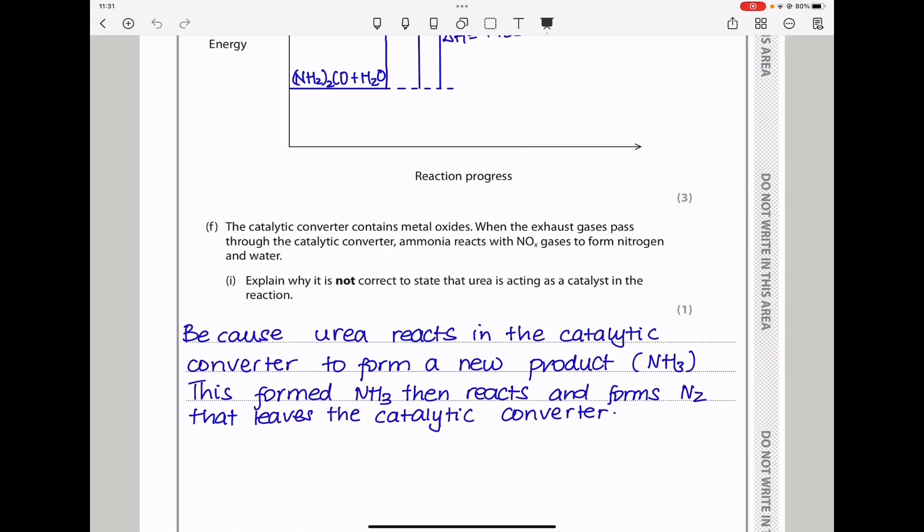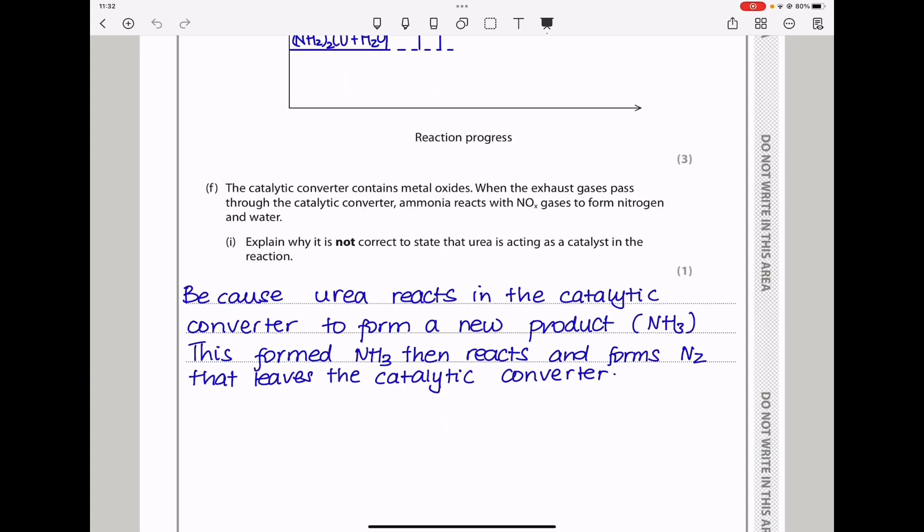Down here they say in part F, the catalytic converter contains metal oxides. When the exhaust gases pass through the catalytic converter, ammonia reacts with oxides of nitrogen gases to form nitrogen and water. Explain why it is not correct to state that urea is acting as a catalyst in the reaction. A catalyst should not be converted into a new product that leaves the catalytic converter. In this case, we see urea is going to react. It's going to be converted into a new product which is ammonia. And then that ammonia will react to form nitrogen which leaves the catalytic converter. So in that case, we could say urea was not a catalyst. So I said because urea reacts in the catalytic converter to form a new product which is ammonia, this formed ammonia then reacts and forms nitrogen that leaves the catalytic converter.